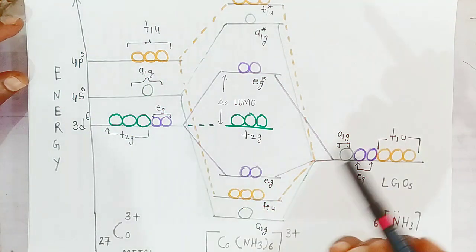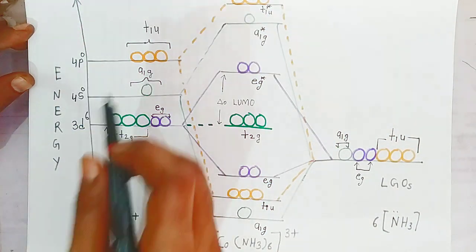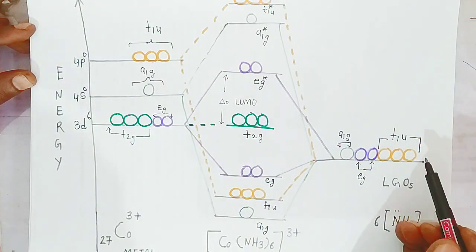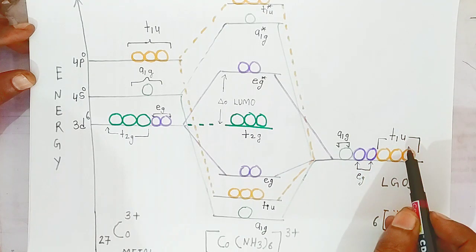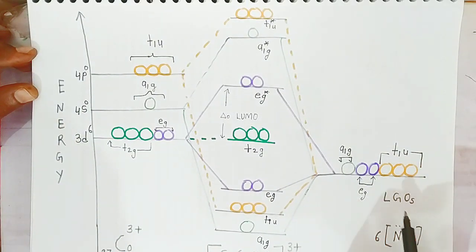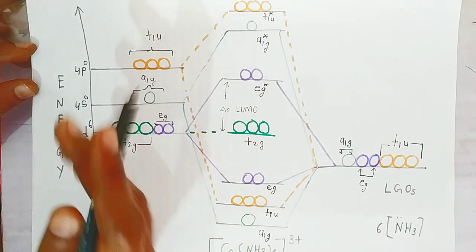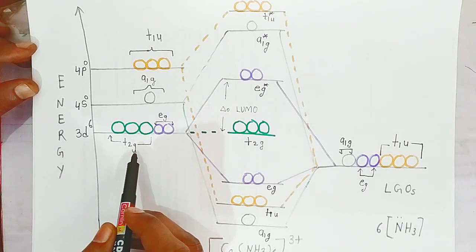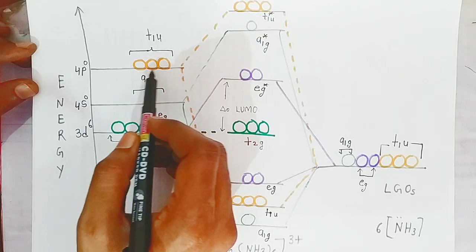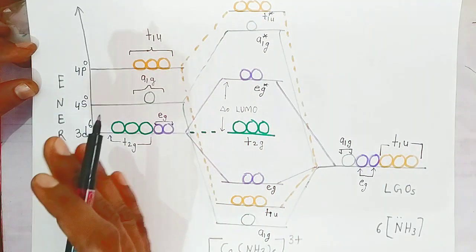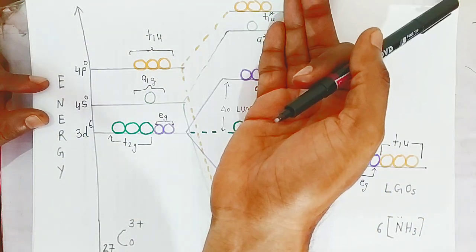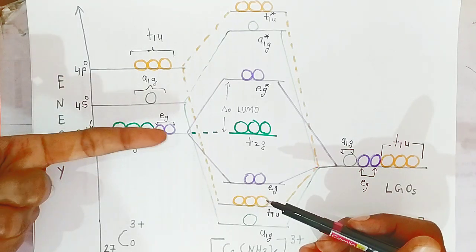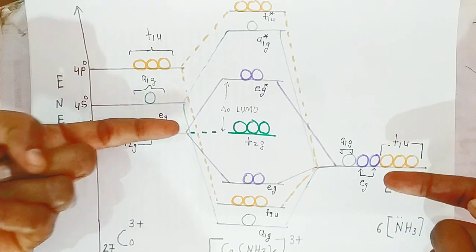This is the energy level diagram of the [Co(NH₃)₆]³⁺ complex. On one side are the atomic orbitals of Co³⁺ and on the other are the ligand group orbitals of ammonia. The ligands are classified into three symmetry groups: a₁g, eg, and t₁u. For the metal, the 3d orbitals are classified as eg and t₂g, the 4s orbital is a₁g, and the three 4p orbitals are t₁u. The metal atomic orbitals are always at a higher energy level than the ligand group orbitals.